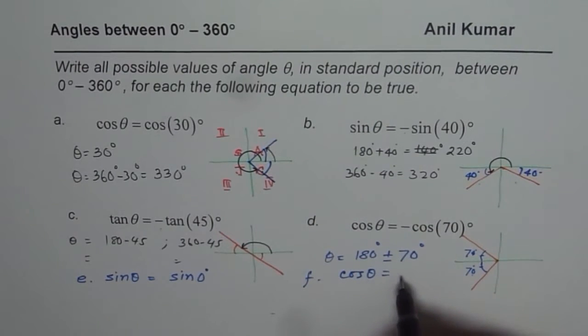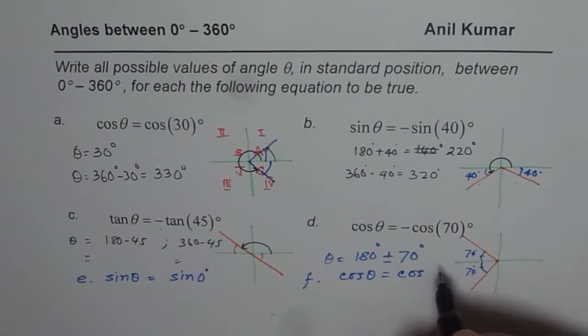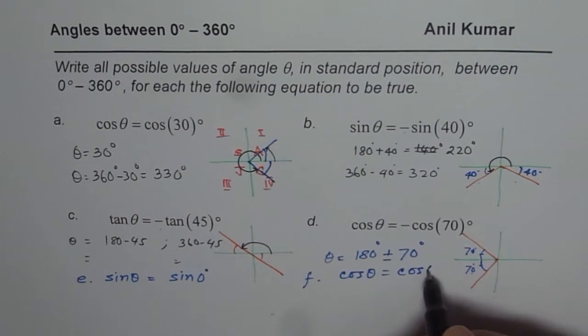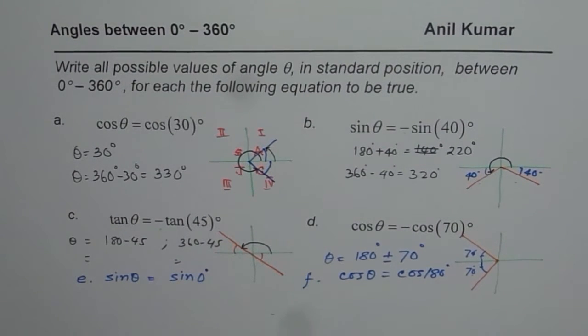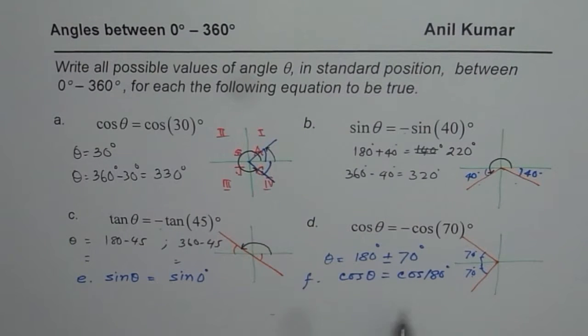Find sine theta for sine equals to 0 degrees and find cos theta for cos of, let us say, 180 degrees. So, do we have or what is the solution for this? Do we have just one solution, two solution, three solutions or how many?